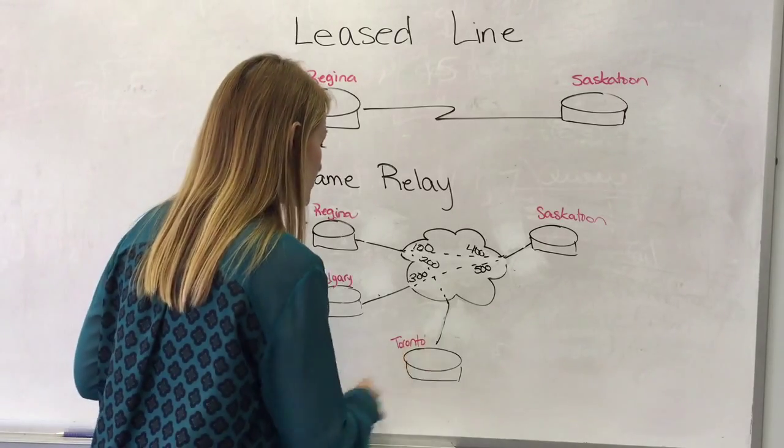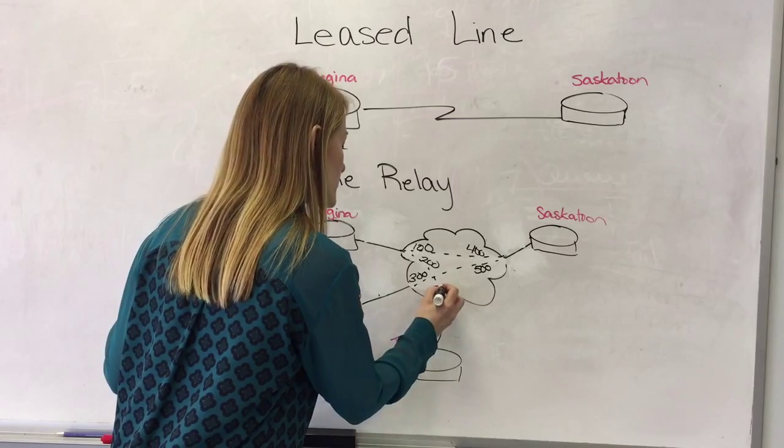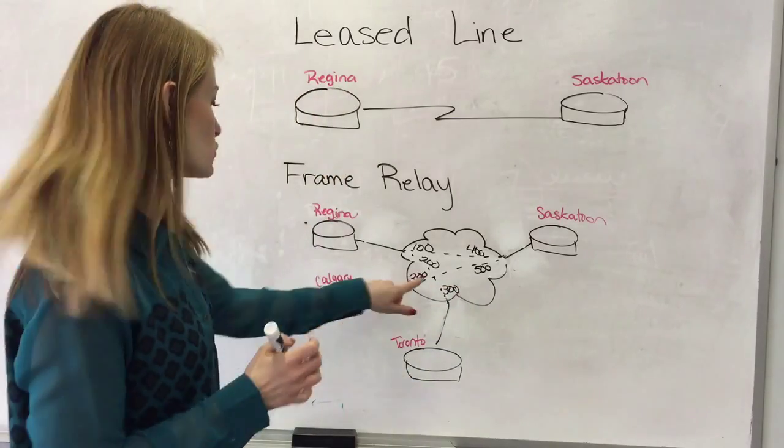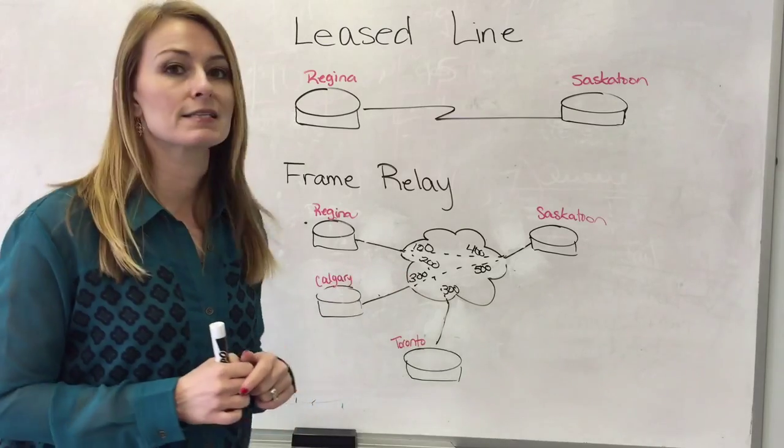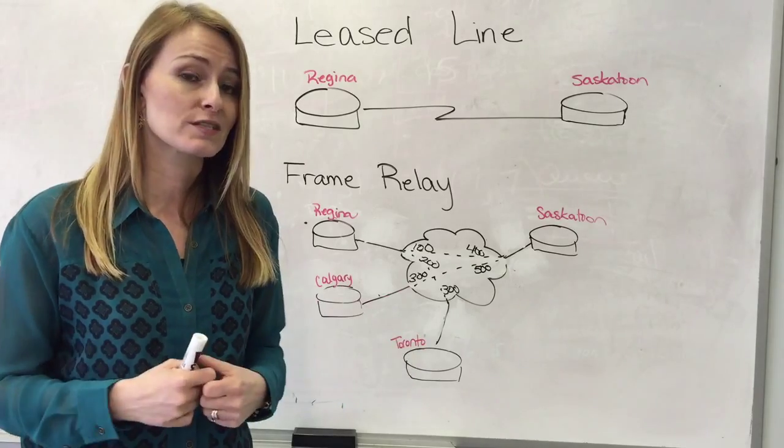We don't have anything for the Toronto office here. So maybe the Toronto office has a DLCI of 300. Just like the Calgary office has a DLCI of 300. But because it refers to your exit, it doesn't matter that those are the same.